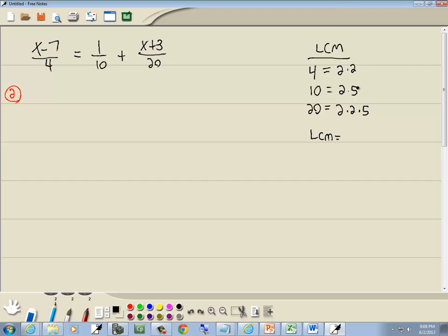Now for our LCM, we'll start with our first prime, which is 2. And I'm looking for the greatest number of 2's on a single line. There's 2 of them here, 1 of them here, 2 of them here. So the greatest number of 2's on any single line is 2.